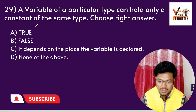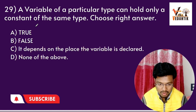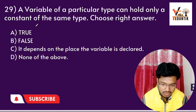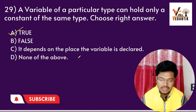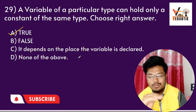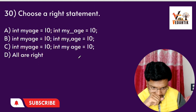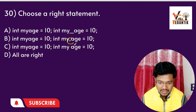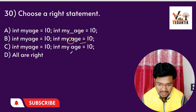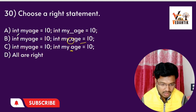Question 24: A variable of a particular type can hold only a constant of the same type — true. Question 25: Choose the correct statement for variable declaration. The correct syntax is int my_age = 10 with int, space, and the variable name. Option A is the right answer.